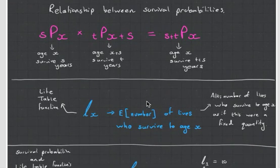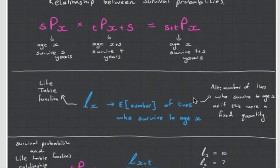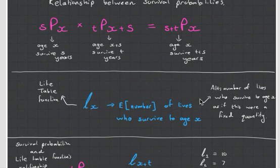Let's talk about one of the life table functions, which is LX, and it is the expected number of lives who survive to age X. Just remember, you can pause the video at any time and read my additional notes written in the white over here. So that's LX.